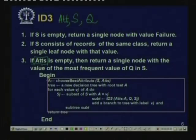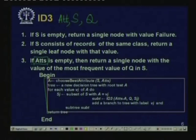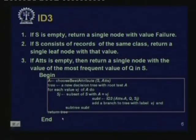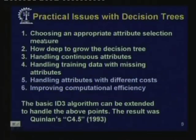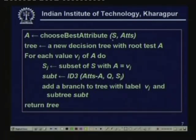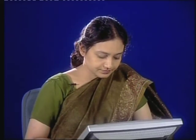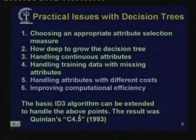Otherwise we carry on the loop. We stop growing the tree when either S is homogeneous, ATT is empty, or S is empty. Otherwise, we choose the best attribute A by looking at the examples S and the remaining attributes, then branch on that attribute and grow a decision tree recursively. Now there are several practical issues that come up in developing a decision tree, some of which are not properly handled in the ID3 algorithm.